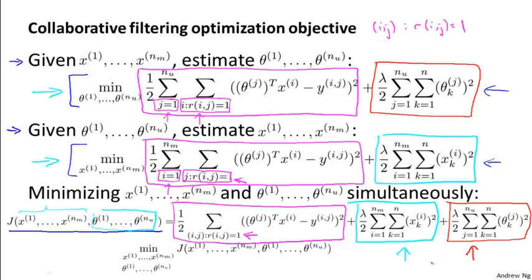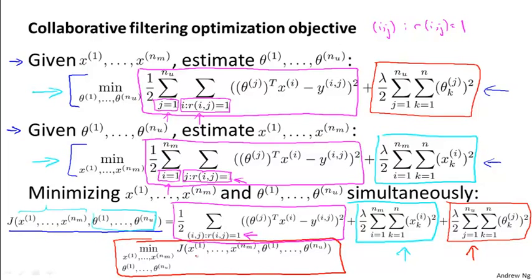Here's an optimization objective that puts together my cost functions in terms of x and in terms of theta. In order to come up with just one optimization problem, what we're going to do is treat this cost function as a function of my features x and of my per-user parameters theta, and minimize this whole thing as a function of both the x's and the thetas simultaneously — instead of sequentially going between the two sets of parameters x and theta.